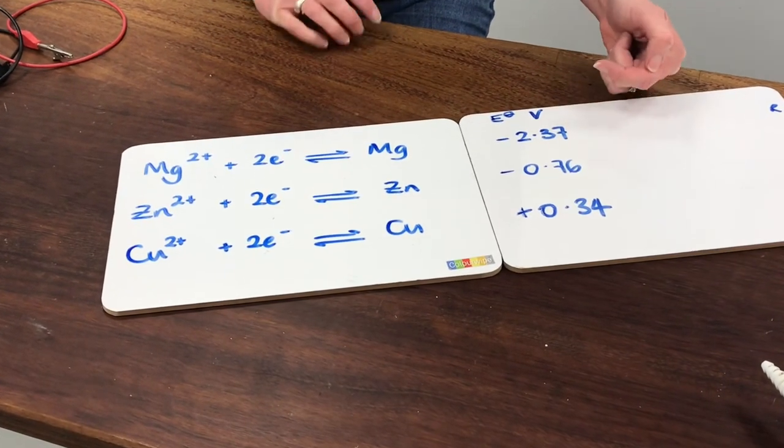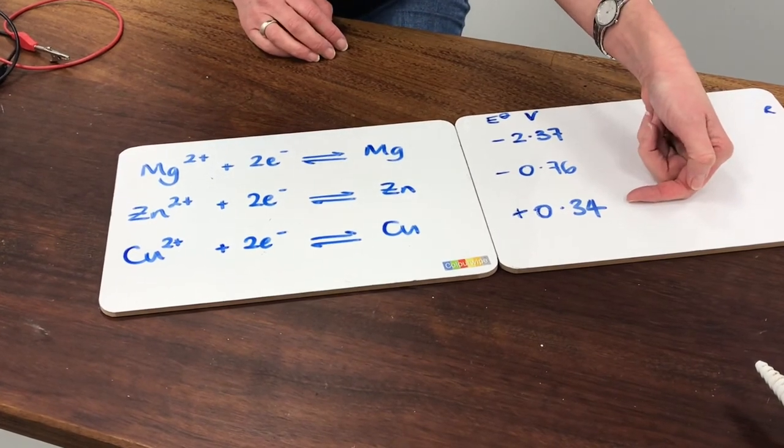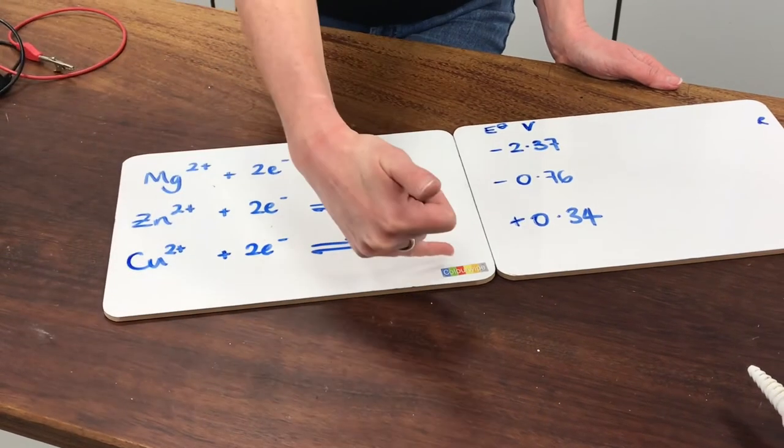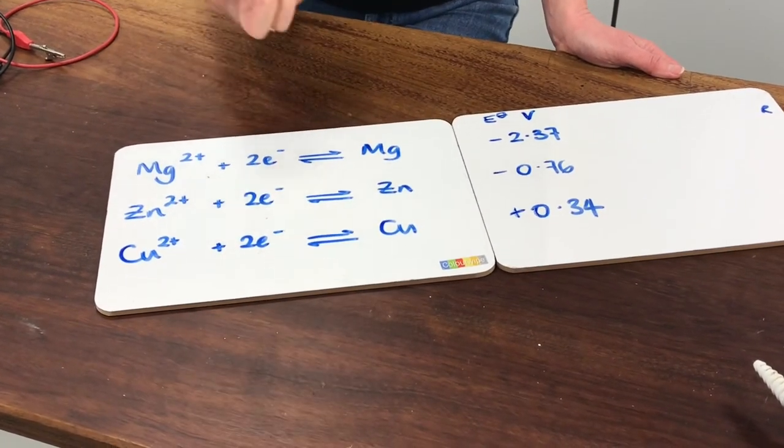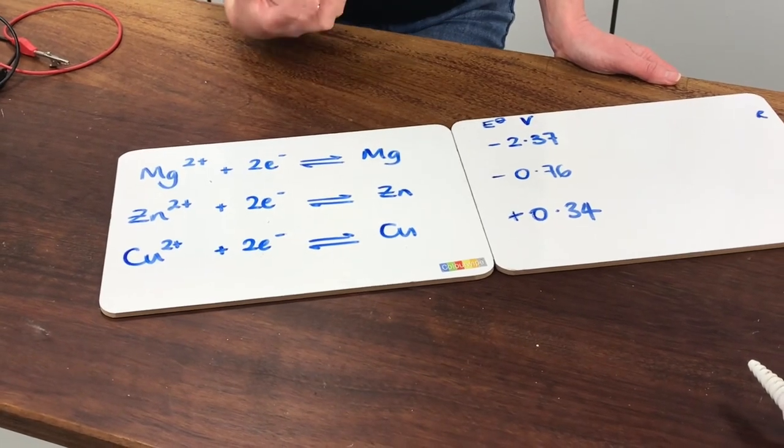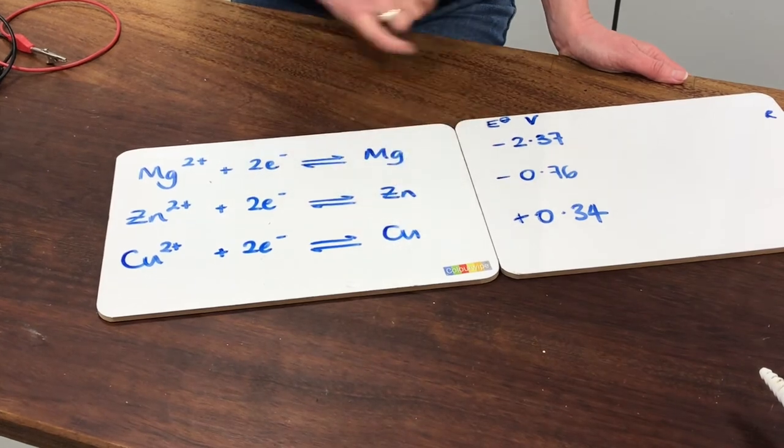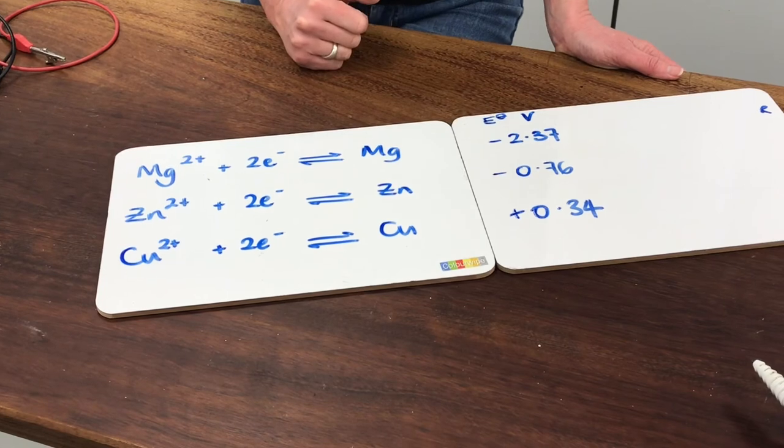Copper by contrast has got a positive value here for its E° value, so that tells me that in comparison to hydrogen, copper wants to do the forwards reaction—it wants to use up electrons. So it would be taking electrons from other things, that would mean it's behaving as an oxidizing agent and forming copper as a result. So these values end up being very powerful because we can make comparisons between different species about whether they're good reducing agents or oxidizing agents.